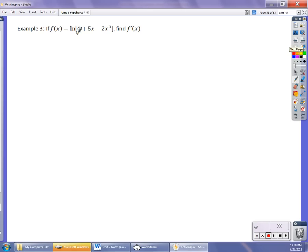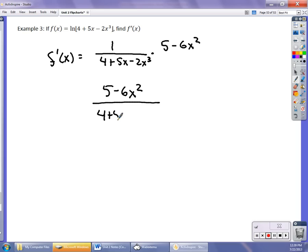In this one, I include the absolute value symbols. Technically, you should do that. Again, it's the same idea. So the derivative, f'(x), is 1 over (4 + 5x - 2x³) times the derivative of all this, which is 5 - 6x². You'll see the answer as (5 - 6x²)/(4 + 5x - 2x³).